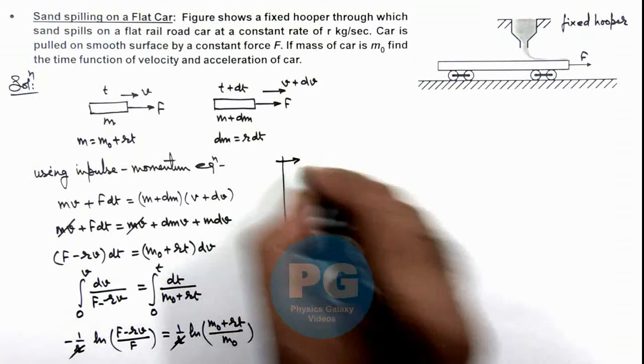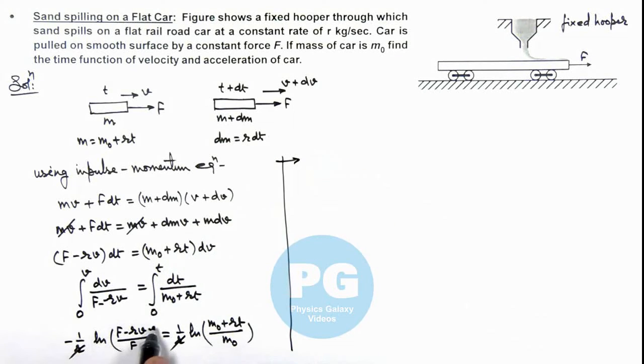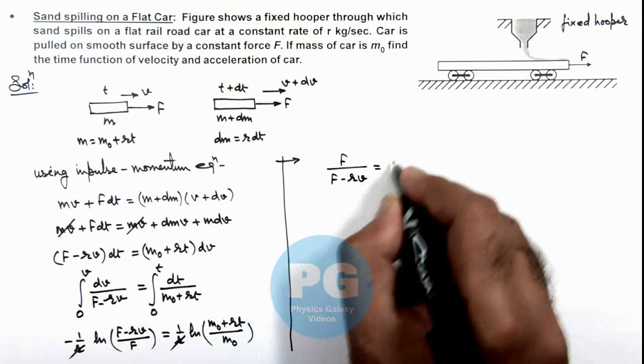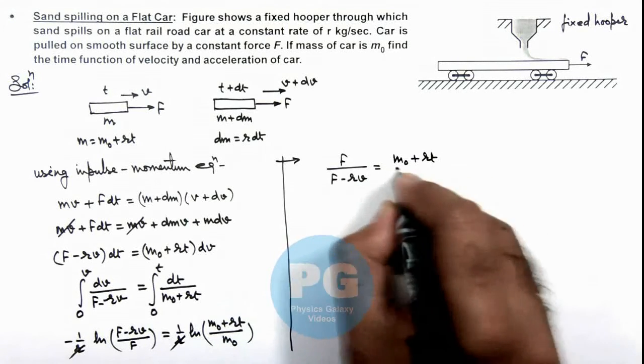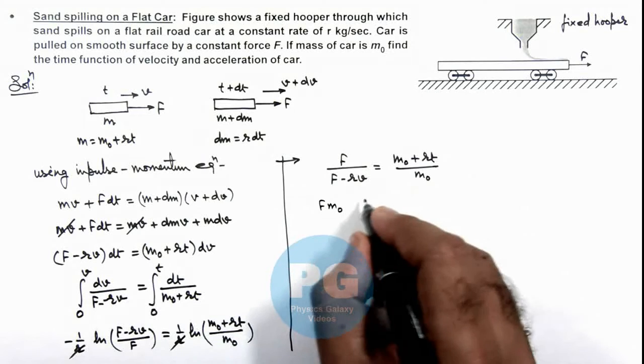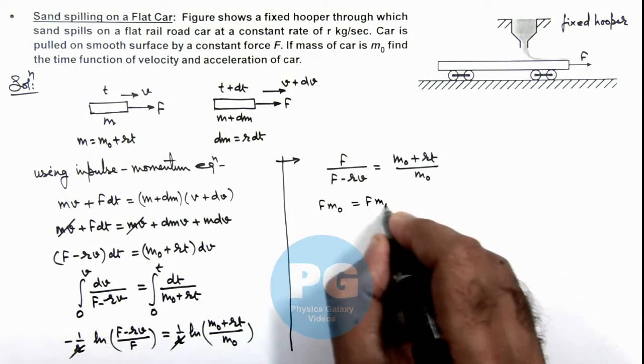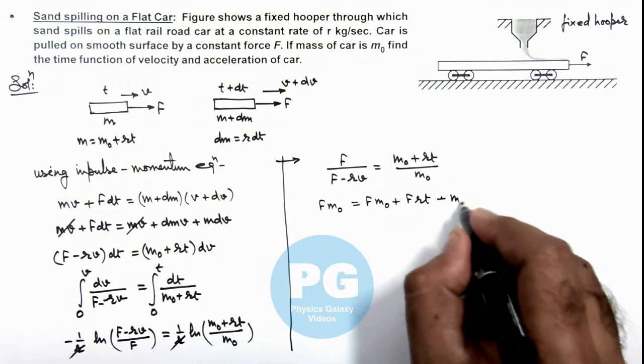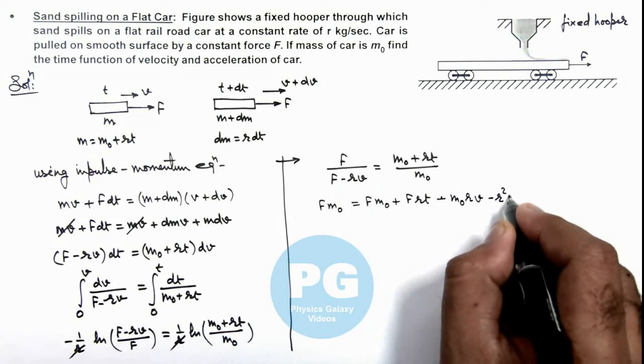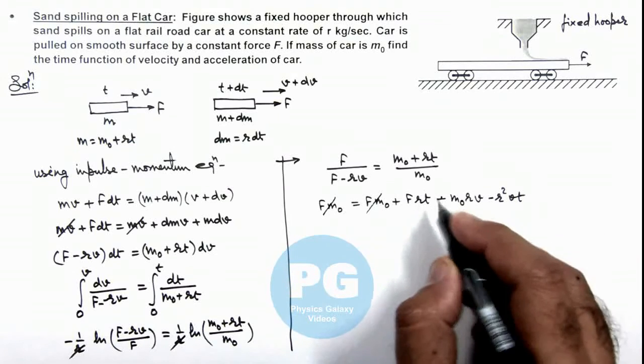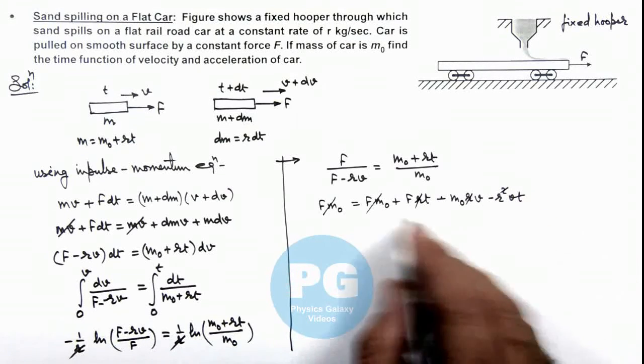And if we continue here, you can see the negative sign can be taken inside over this logarithmic function, so this becomes F upon (F minus rv) equals (m₀ plus rt) by m₀. On cross multiplying, F m₀ equals F m₀ plus F rt minus rv m₀ minus r²vt. Here F m₀ gets cancelled out, and in this term one r also gets cancelled out.